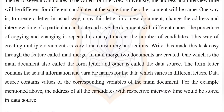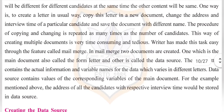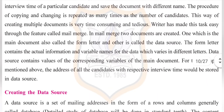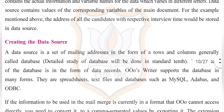In mail merge, two documents are created: one is the main document, also called the form letter, and the other is called the data source. The form letter contains the actual information and variable names for the data which varies in different letters. The data source contains the values corresponding to those variables. For example, the addresses of all candidates with their respective interview times would be stored in the data source.